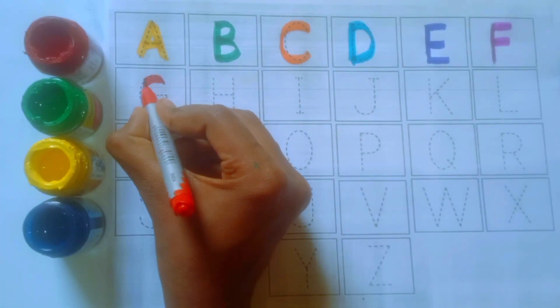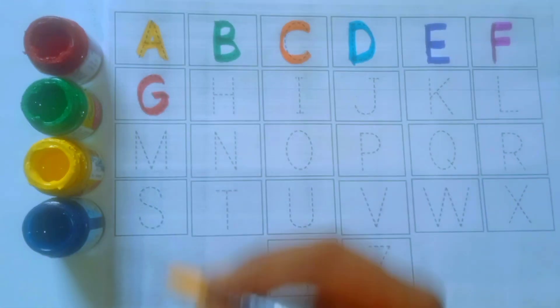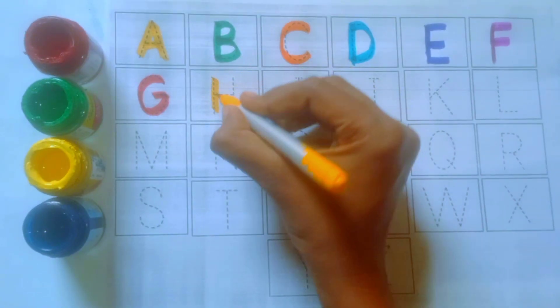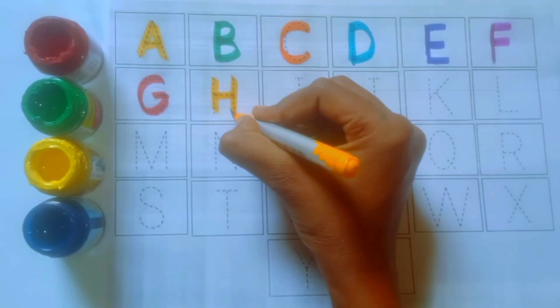Red color, G. G for girl. Yellow color, H. H for hand.